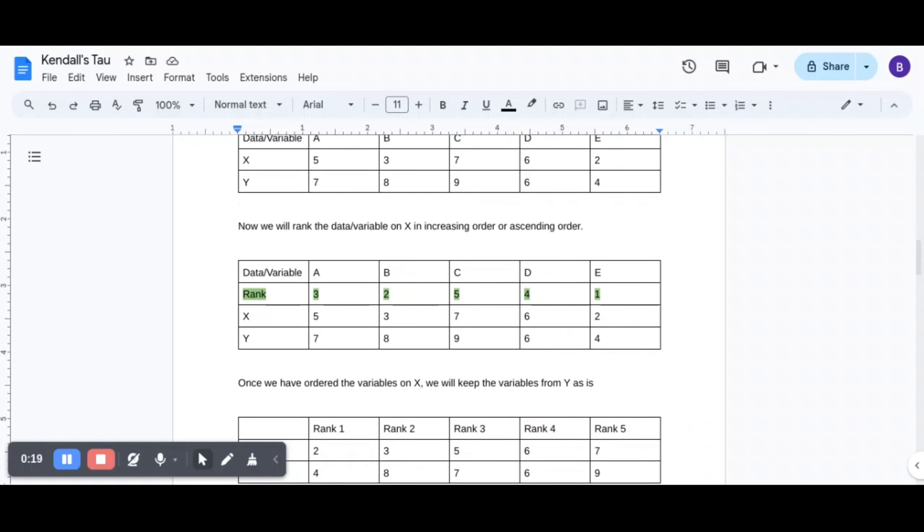So here, what I have done is I have just added another row above X and I named it rank. Okay, so I see the smallest value here on the X variable is 2, so I have listed it as rank 1. Then I have listed 3 as rank 2 and that's how I proceeded.